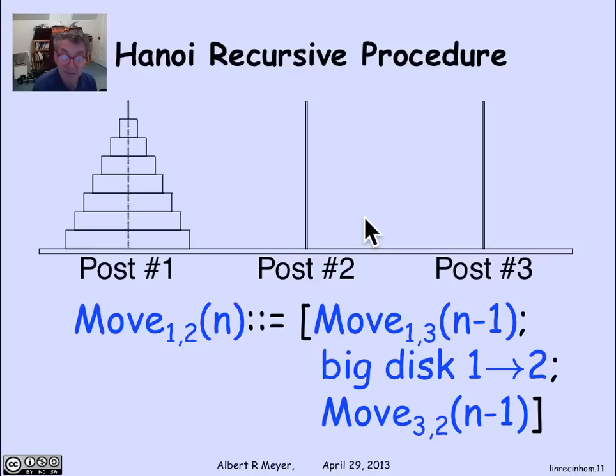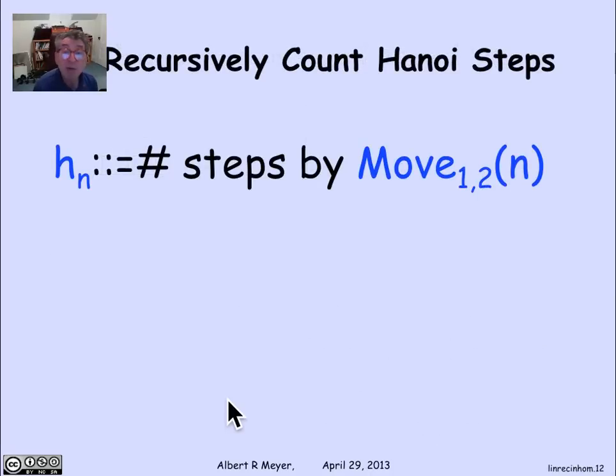It's very elegant and simple. The key observation is this business about the symmetry among the poles, so that it's fine to figure out how to do 1, 2 in terms of doing 1, 3, and 3, 2. How many steps does this take? That's what we're really interested in. How many moves of disks does it require to carry out this procedure when you're trying to move a stack of n disks?